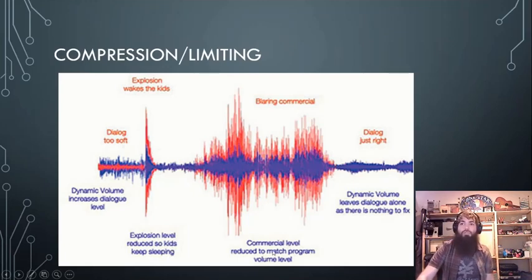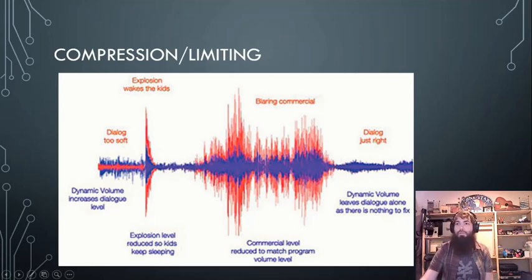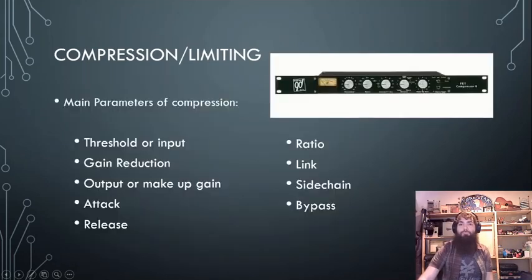When an explosion happens, the compressor reduces the level so the kids can keep sleeping. The commercial level is reduced to match normal volume. And if the level is already just right, it leaves it alone.